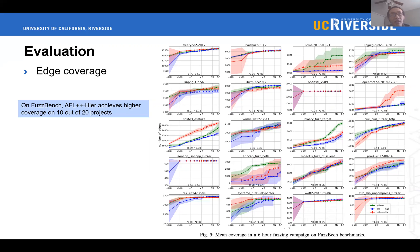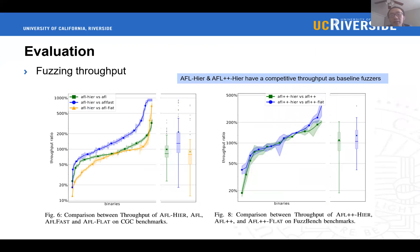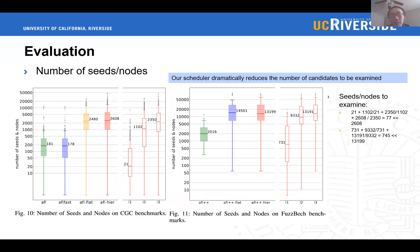On FuzzBench, AFL-hier achieves higher edge coverage on 10 out of 20 projects. Third, results on CGC benchmarks show that AFL-hier has a competitive throughput compared to AFL and AFL-fast. Moreover, even built on the faster AFL++, our approaches still have comparable throughput. Finally, experimental results on CGC and FuzzBench demonstrate that our hierarchical seed scheduler dramatically reduces the number of candidates to be examined during seed scheduling.